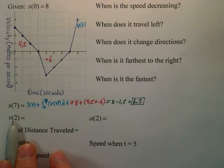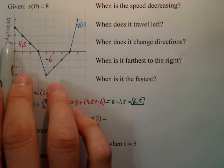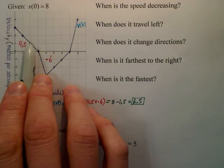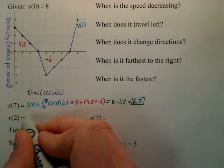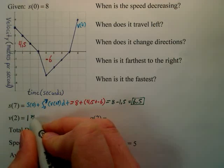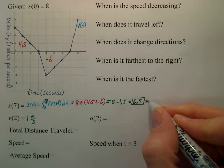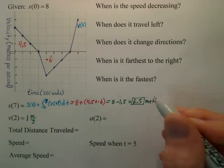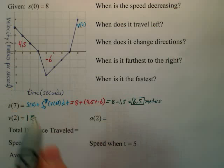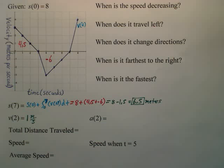If I want velocity at t=2, hopefully that's pretty simple, because this is a velocity graph — the velocity at 2 is simply 1. If you want to put it as meters per second, it might be good for units. This would be meters, and according to the increments, meters per second. So that would be meters per second.